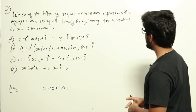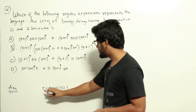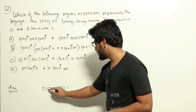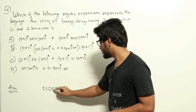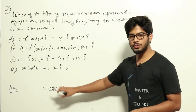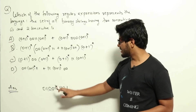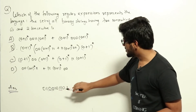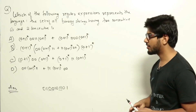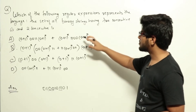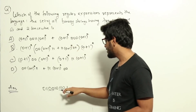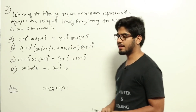I've written one sample string here. This string contains two consecutive zeros and it also contains two consecutive ones, so this string belongs to the language given in the question. Now let us look at the regular expressions given in the options and see which ones can generate this string correctly.